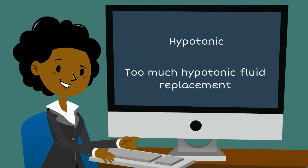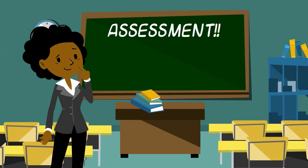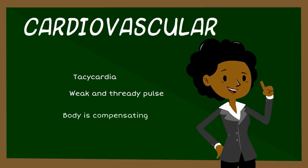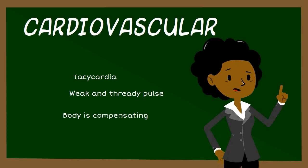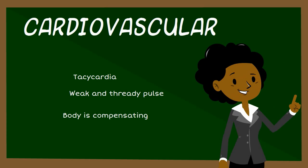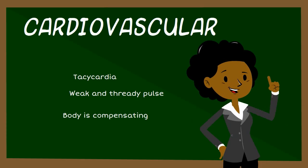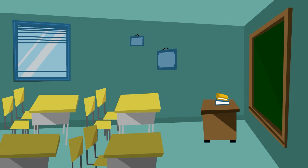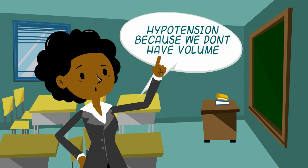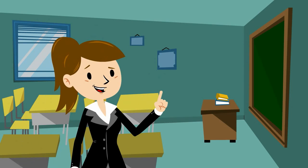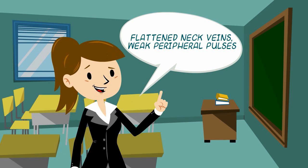When assessing patients with fluid volume deficit, start with the cardiovascular system. If there's not enough volume, the pulse rate is going to increase to compensate. The fluid that's there must constantly be circulated to try to maintain perfusion. The pulse is going to be weak and thready, and there will be a decrease in blood pressure due to lack of volume. You'll also assess flattened neck veins and diminished peripheral pulses.